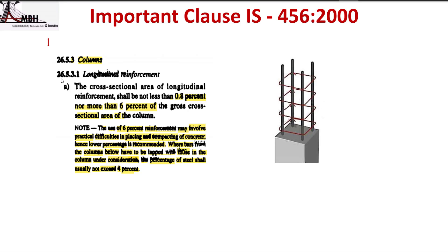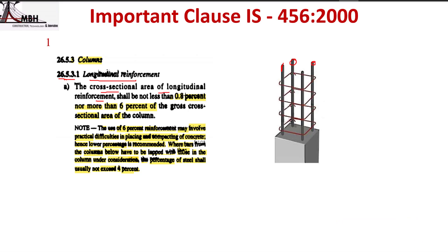The first clause is 26.5.3.1 on Longitudinal Reinforcement. In the column case, if you are providing longitudinal reinforcement, the code recommends that the cross-sectional area of longitudinal reinforcement shall not be less than 0.8% of the gross cross-sectional area of the column. So you have to provide a minimum of 0.8% of the gross cross-sectional area.